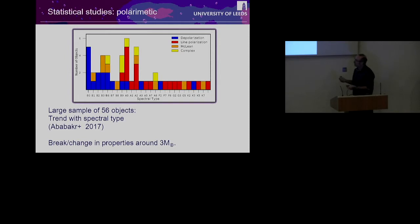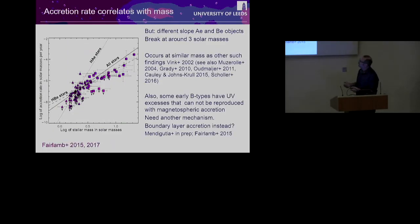If we then look at other samples of stars, of Herbig stars, and look at their accretion rate, we find that the more massive the star, the higher the accretion rate, which makes sense. If you want to become a bigger star, you have to accrete more material. But there seems to be a break in the slope between low mass stars, around 3 solar masses again, and high mass stars.